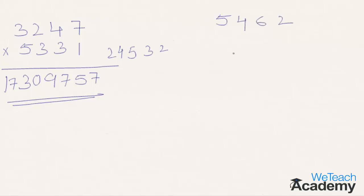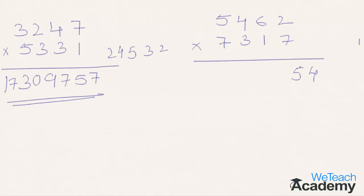Let's take one more example and multiply 5462 with 7317. In the first step, 7 multiplied by 2 is 14, so 4 is taken to the final answer and 1 is carried. In the second step, 7 into 6 is 42, plus 2 into 1 is 2, giving 44; plus the carried 1, gives 45. So 5 is taken to the final answer and 4 is carried forward. In the third step, 7 into 4 is 28, plus 3 into 2 is 6, giving 34; plus 6 into 1 is 6, giving 40. Plus the carried 4, gives 44. So 4 is written in the final answer and 4 is carried forward.